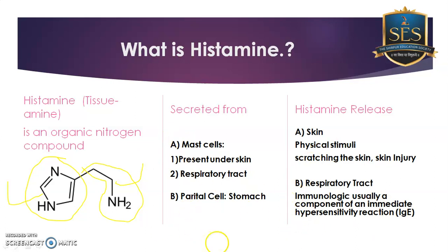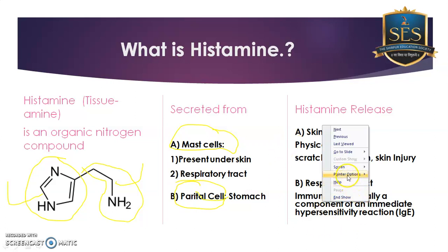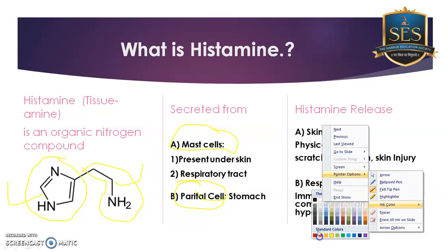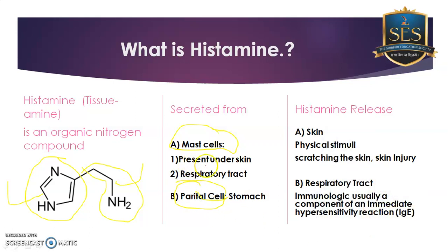Histamine is specifically released from two kinds of cells. The first is the mast cell and the second is the parietal cell. A follow-up question is where these cells are located. Mast cells are located under the skin and also in the respiratory tract.